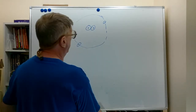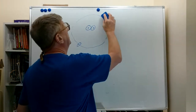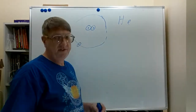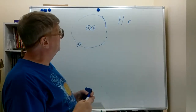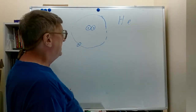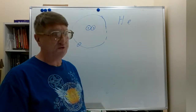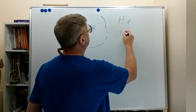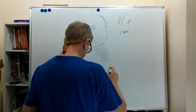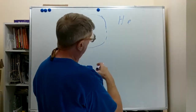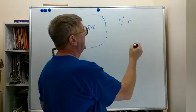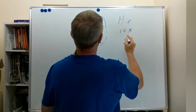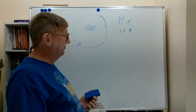Electrical forces can cause an electron to be separated from the atom — this is a helium atom, by the way. It can cause that electron to be separated. It's still a helium atom, but because we've removed a negative charge, we now have a net positive charge: two plus, one minus. We've created what's called an ion. When we charge an atom by removing an electron, we create an ion, and this is a positively charged ion.